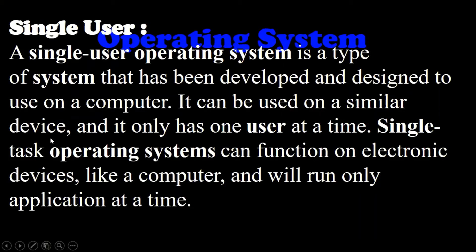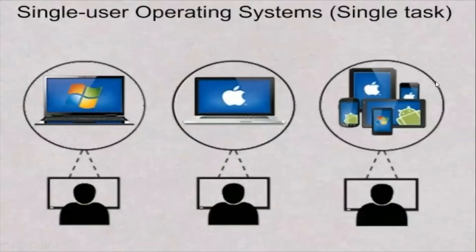In a single user operating system, only one user can work at a time, and there is no facility for communication with other devices or computers. It is also called a single task operating system, which can run on electronic devices like computers and run only one application at a time.